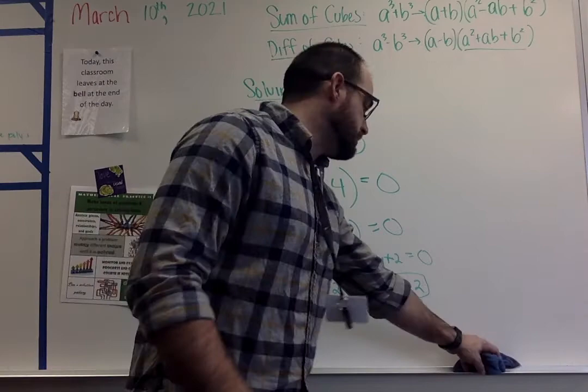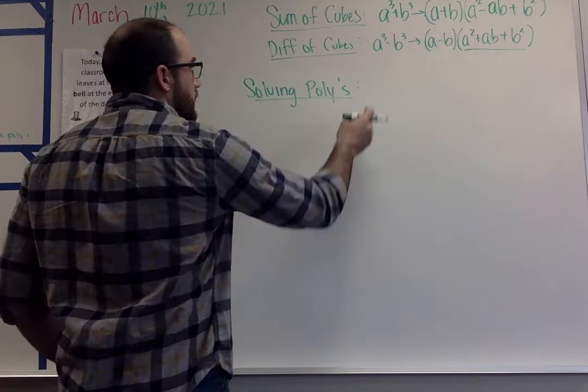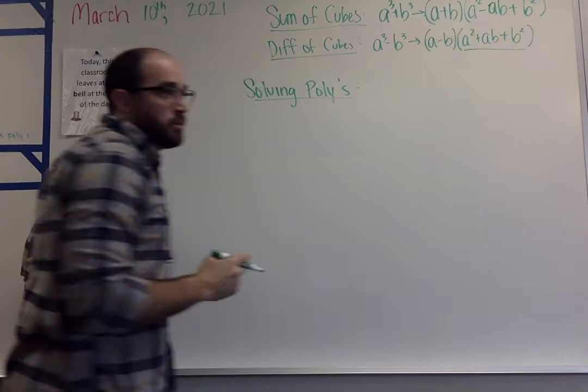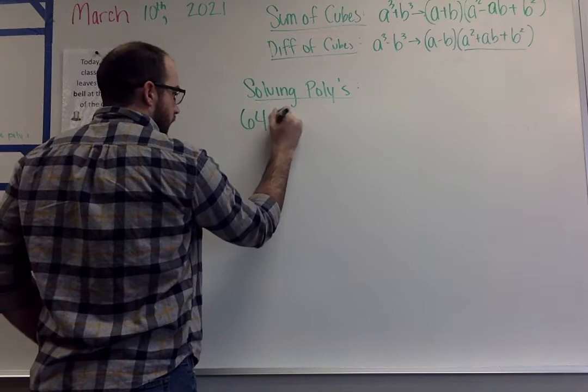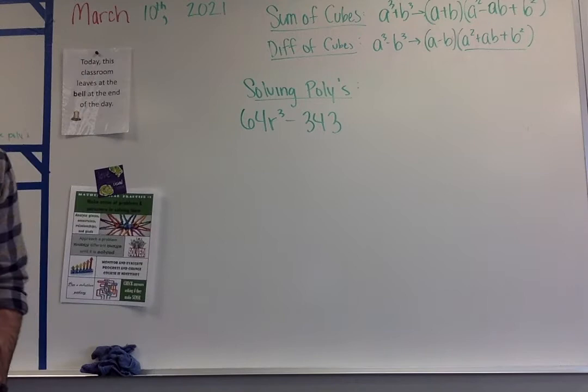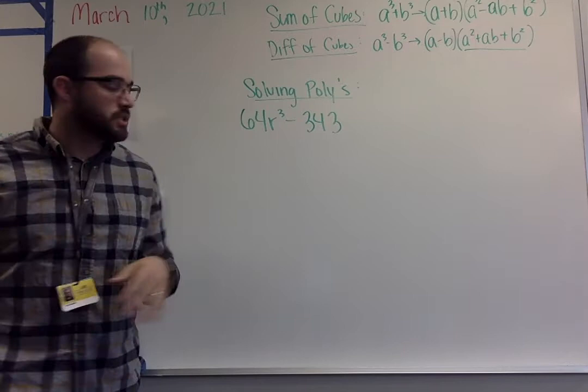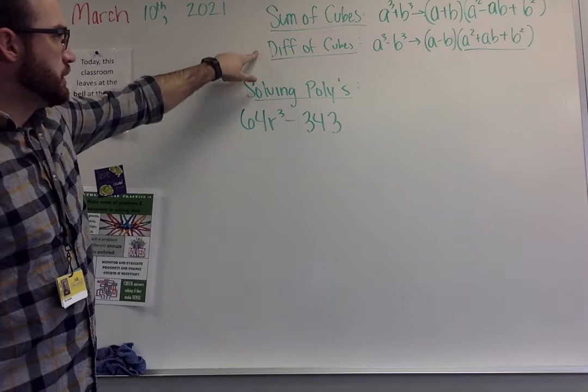The last one is our sum or difference of cubes. The only difference between those two things is the plus or the minus in the middle. The one I'm going to show you right now is difference of cubes. If it's sum of cubes, it's essentially going to be the exact same thing that I'm doing in the example, except it just changes the signs from our format up above. So this problem is 64r³ - 343. Again, you should always look to see if you can factor something out at first. If you can't, then you're looking at this piece. This one I can't factor anything out right now.